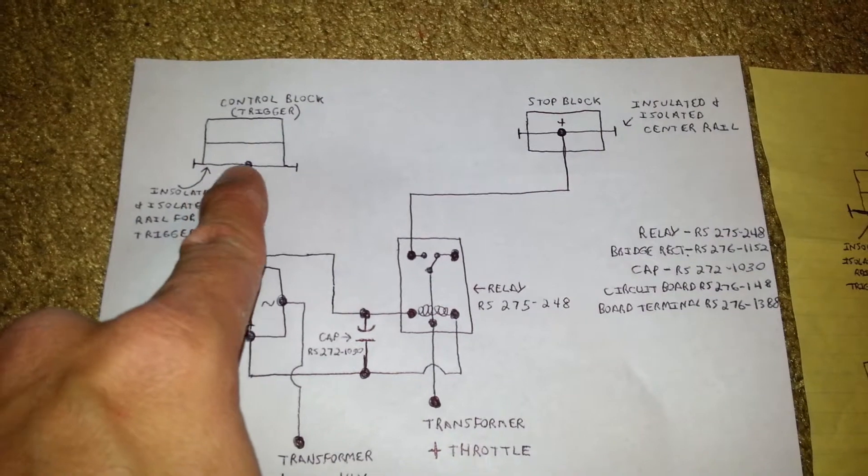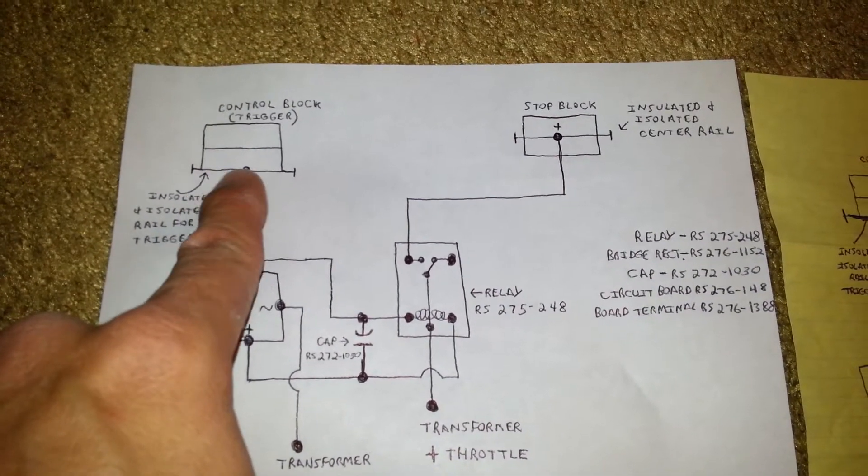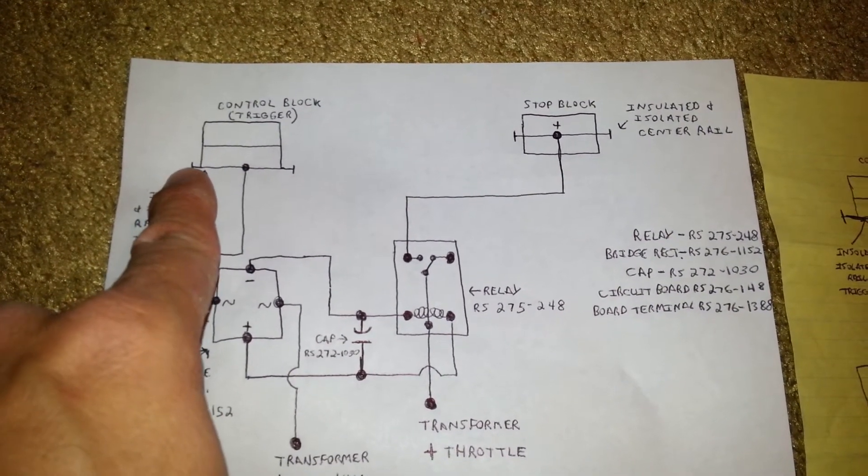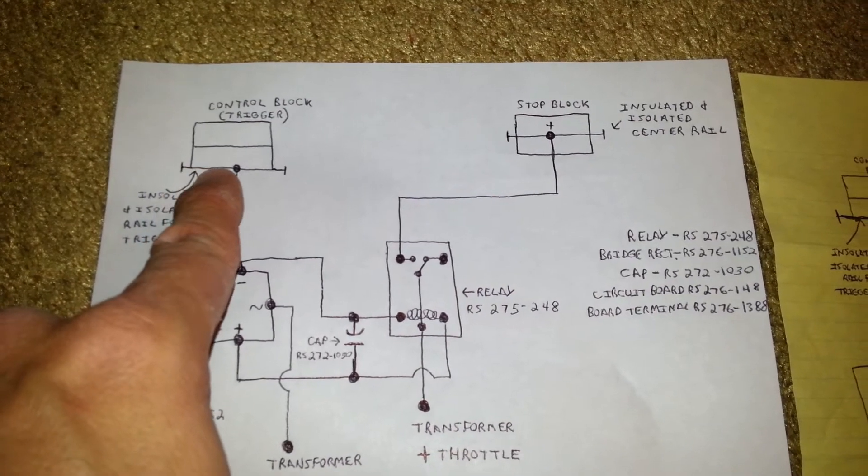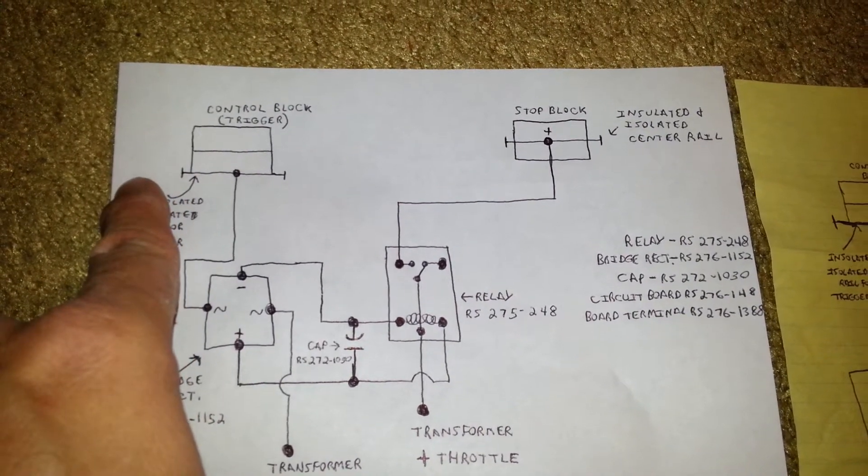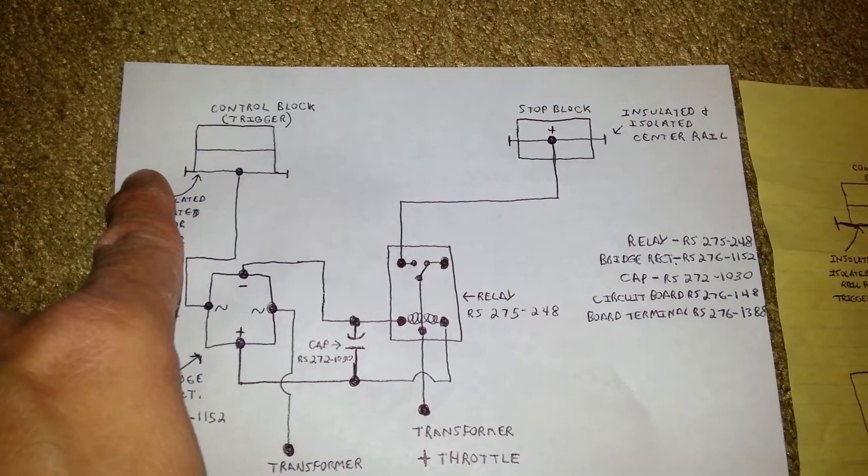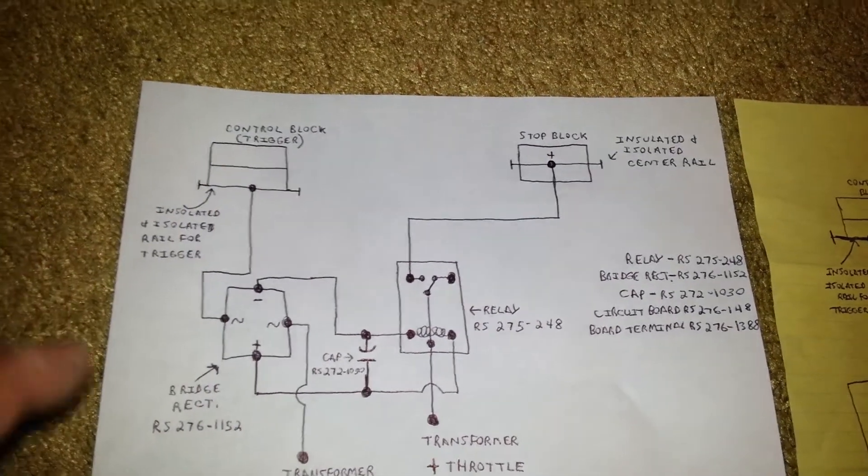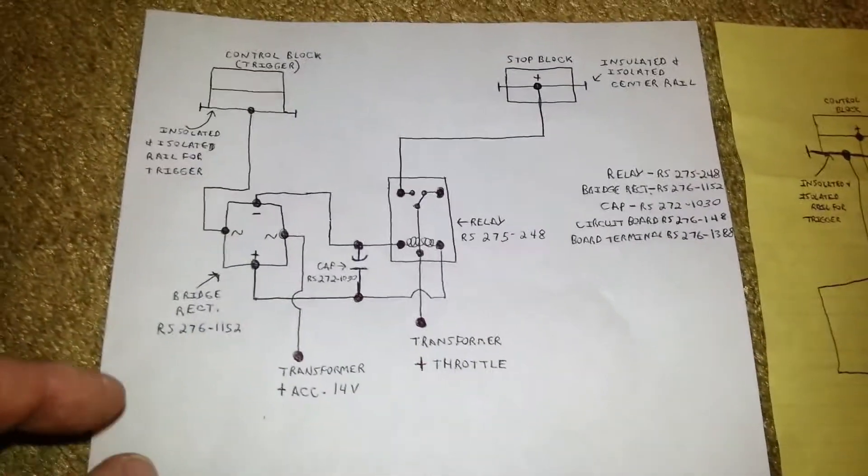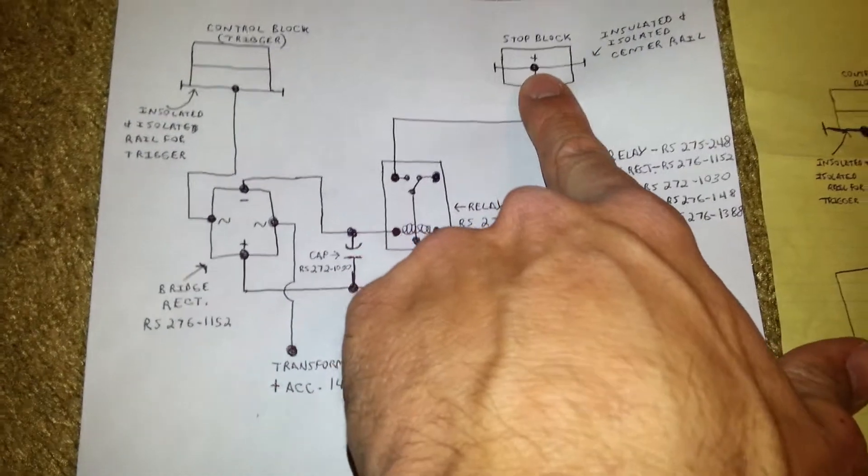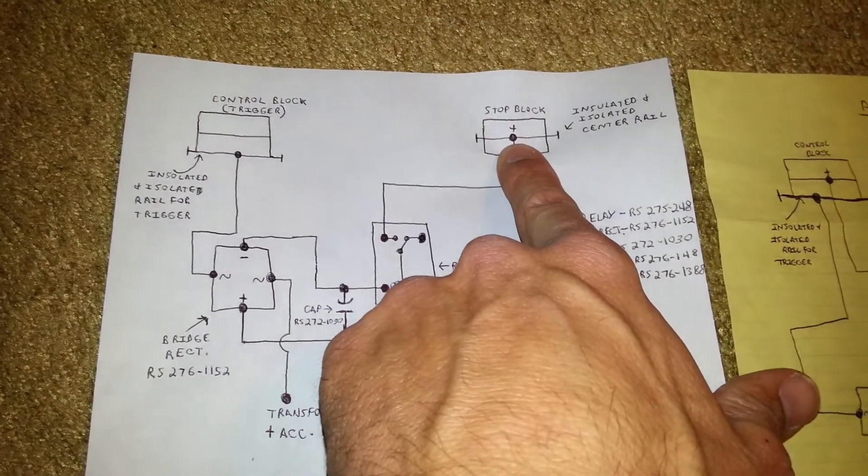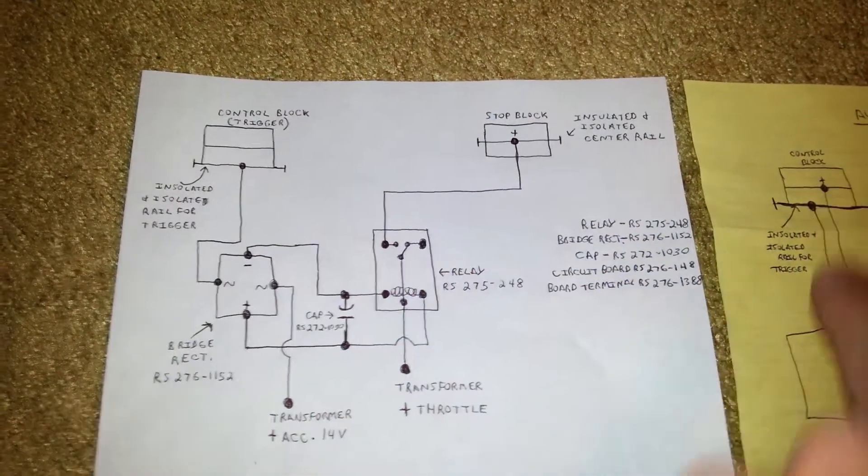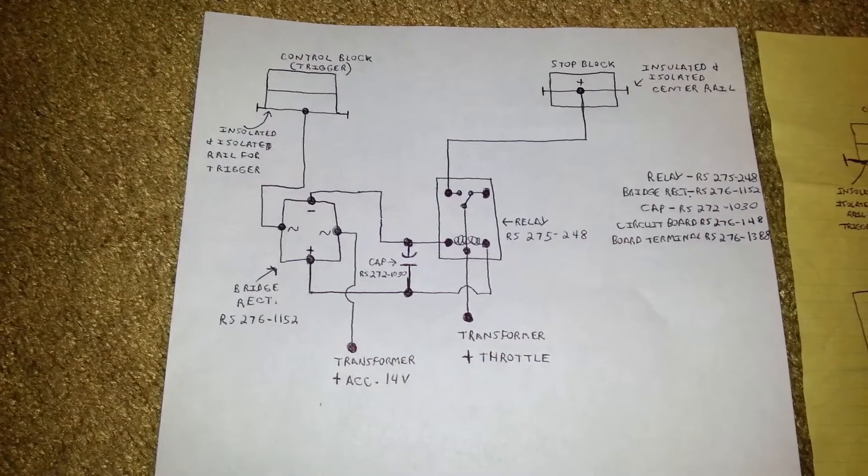So there is no power in this section of rail right here until you have the train come across and trigger it by jumping power from this outside rail to this outside rail. That, in turn, throws the relay positive to the stop block, and off that train goes.